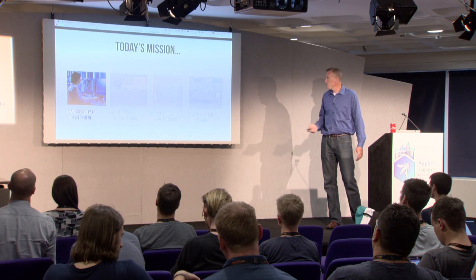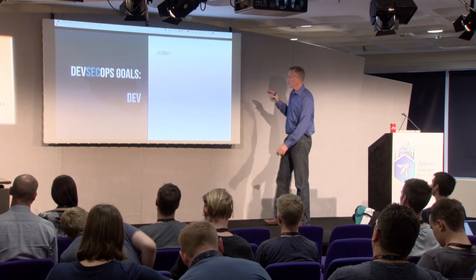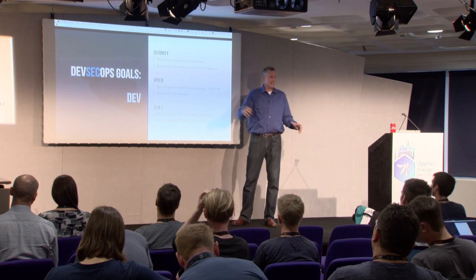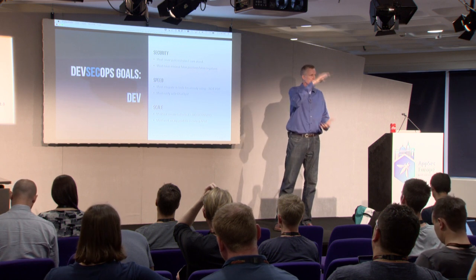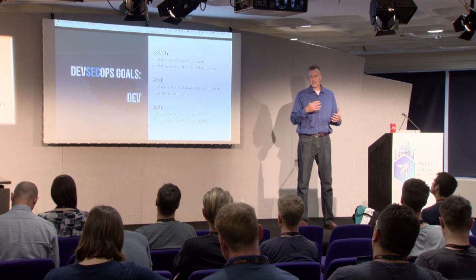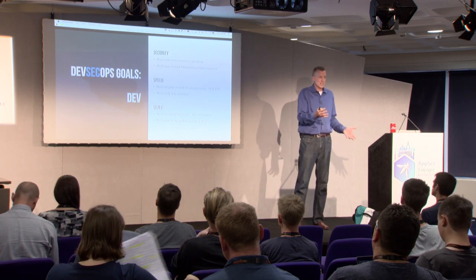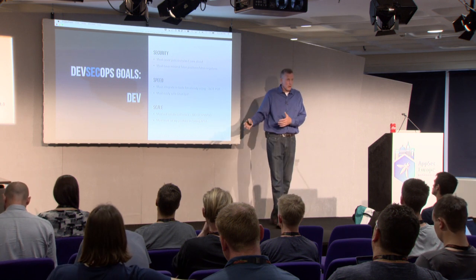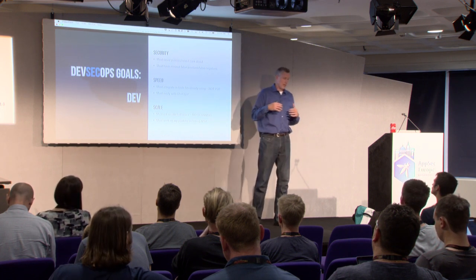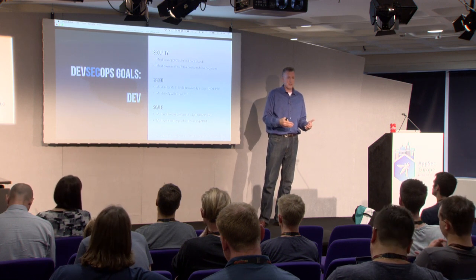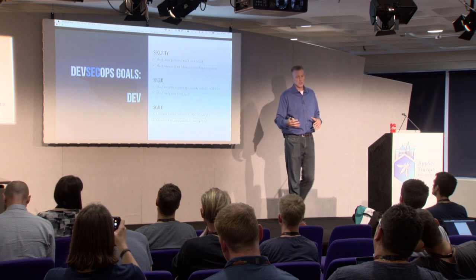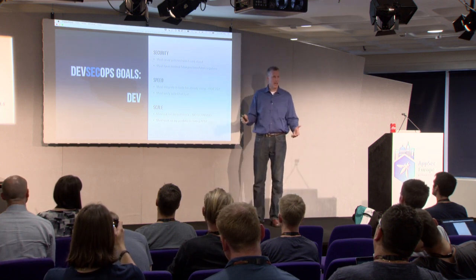These are the four steps we're going to go through, starting in development. The goals for development: I want to see security, speed, and scale. Security means the right rules, the right policies, checking a broad range of stuff. Static tools don't check click-jacking, parameter pollution, or things obvious in HTML because they don't have access to the HTML. Dynamic tools don't check things buried deep in the code, like hard-coded passwords and wrong encryption algorithms. Neither approach is really good at identifying injection problems — SQL injection, cross-site scripting, XXE, command injection — because data flow analysis is really hard.